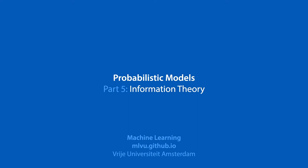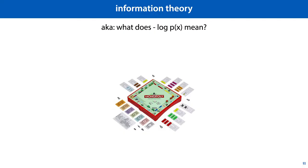Information theory is all about the relation between probability and encoding information. Specifically, what it can do for us in this lecture is give us an interpretation of this negative logarithm of a probability that we've been using so far.